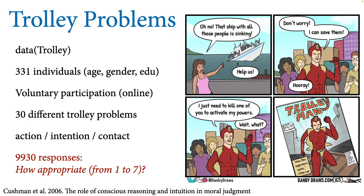There are hundreds of trolley scenarios that people come up with. The dataset we'll use is from a 2006 study that recruited 331 individuals voluntarily on the internet to go through a large number of these trolley problems and give their intuitions about how morally permissible the action was on a scale of one to seven. They recorded age, gender, and completed educational level. There are 30 different problems each person answered, structured so that the principles of action, intention, and contact are varied in and out of different stories, to estimate the association between these moral principles and judgments of appropriateness.